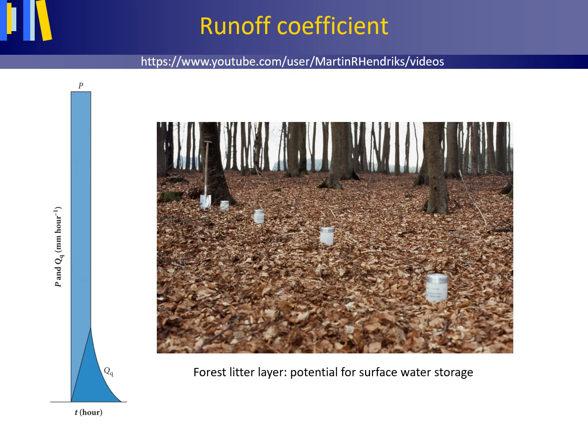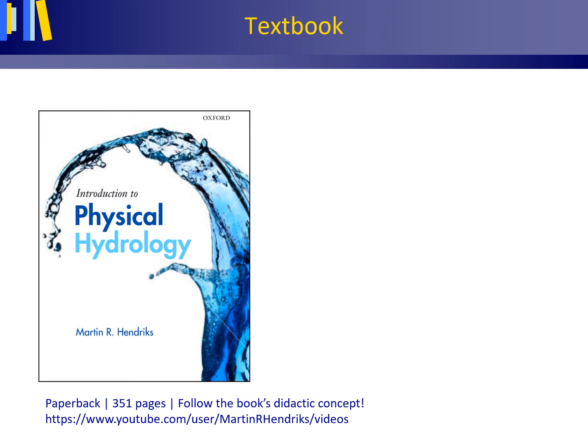To get the perception right, the figure to the left shows a hydrograph of the quick flow for a storm with a runoff coefficient of 30%, with precipitation and quick flow presented in millimeter per hour, thus along equally scaled axes.